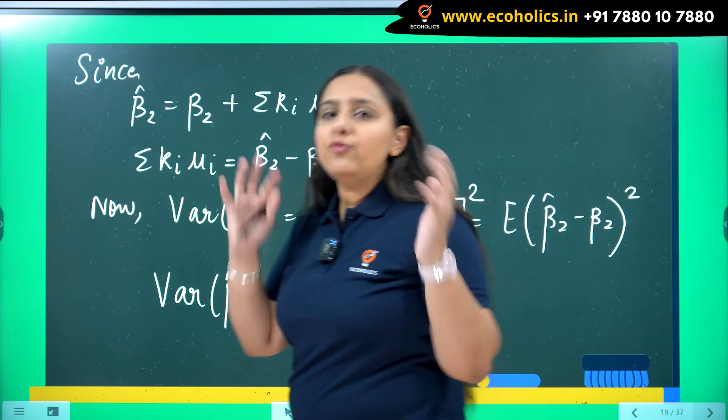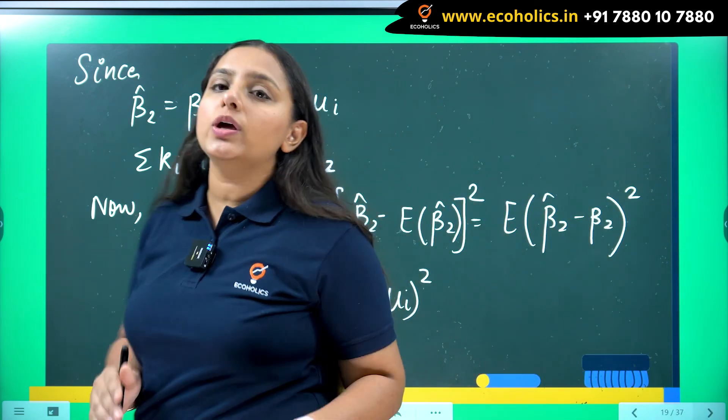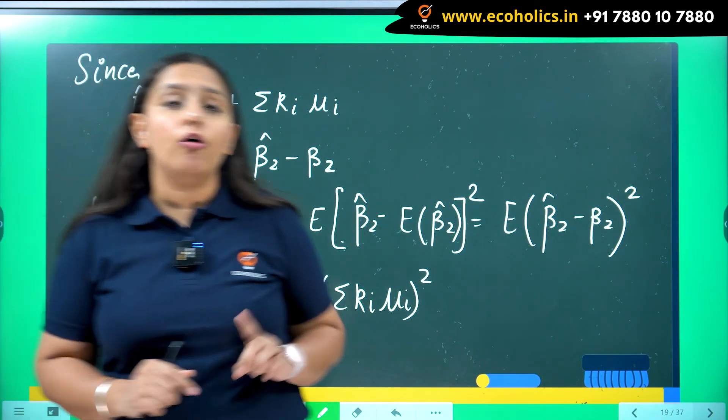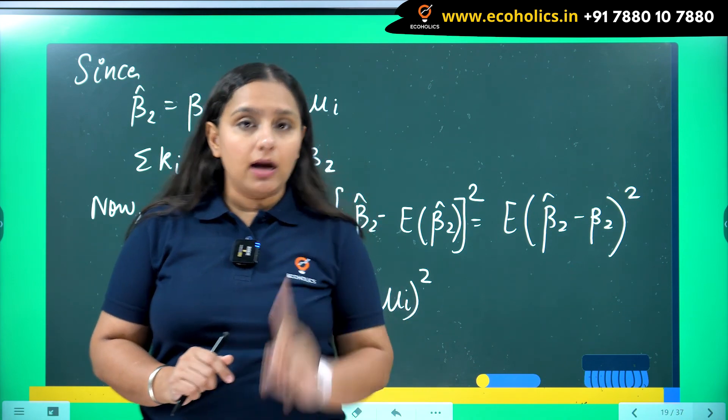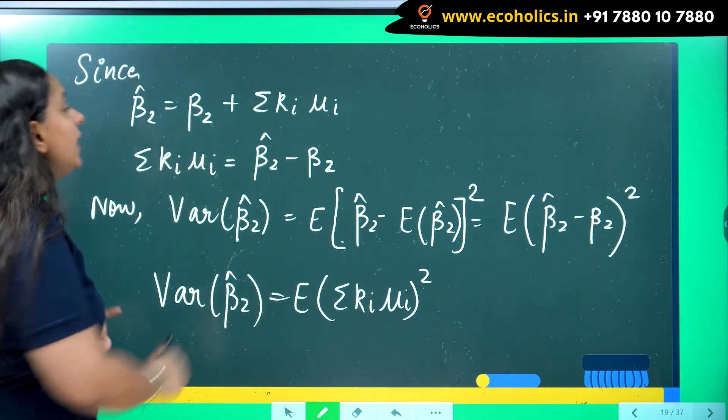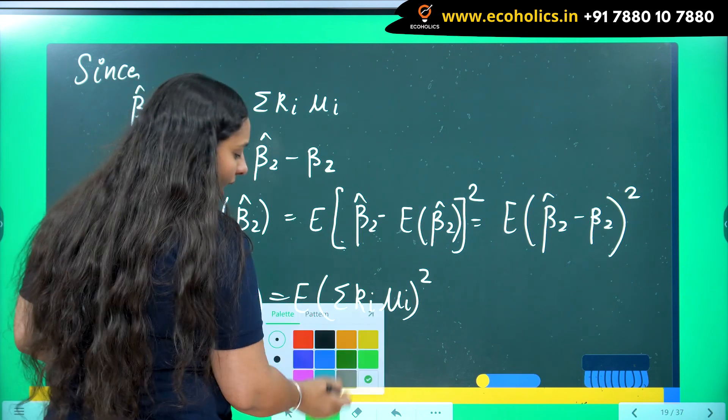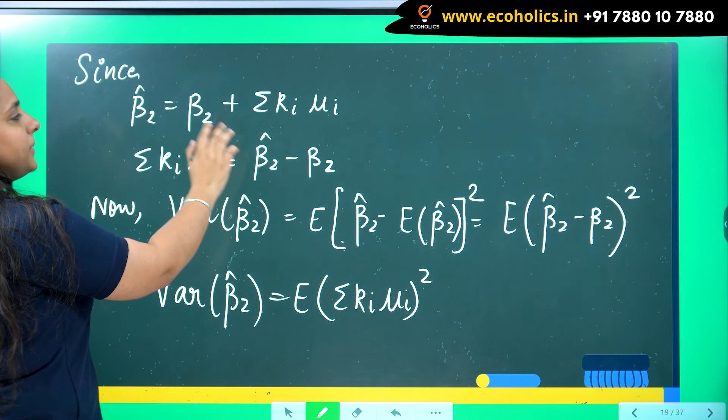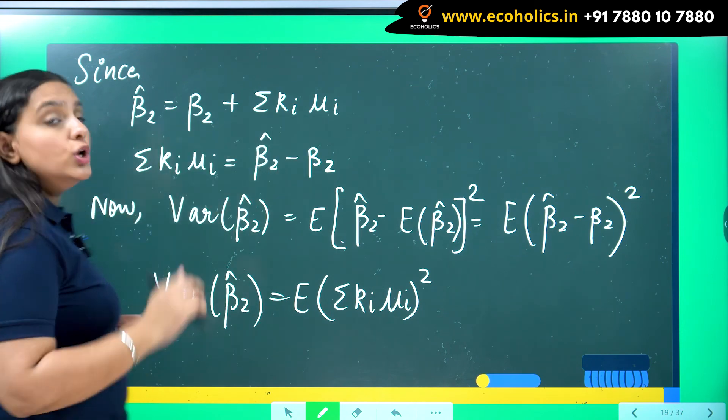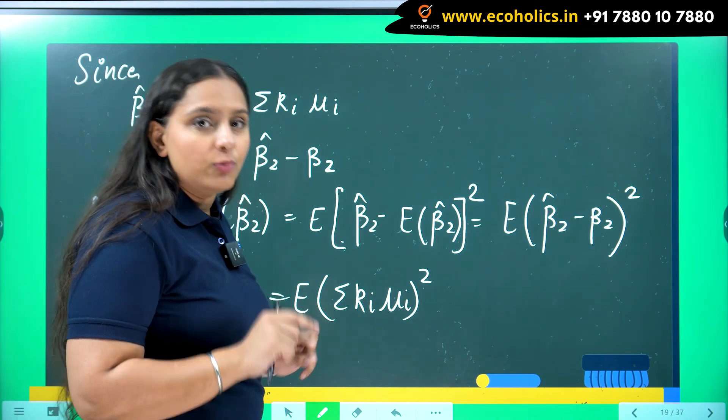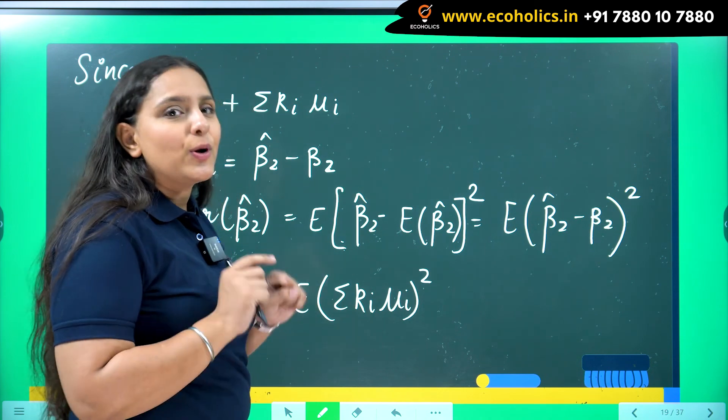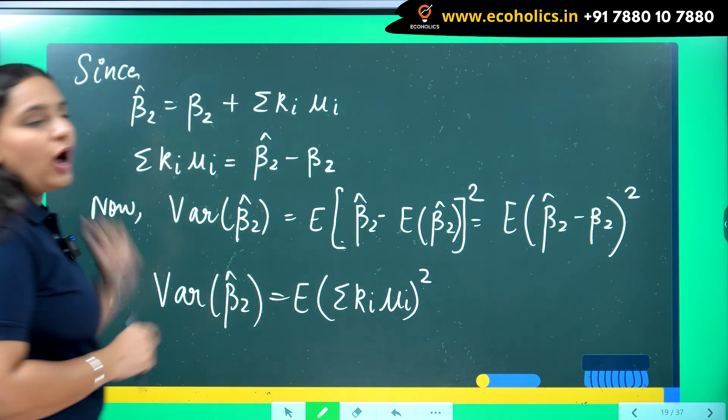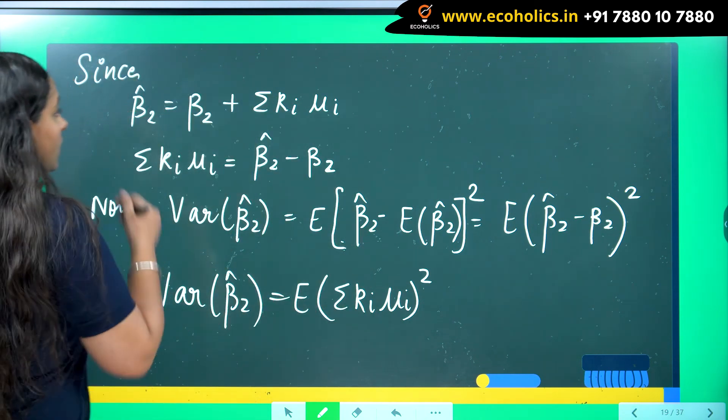Now in the video where I was talking about linearity of beta 2 hat and unbiasedness of beta 2 hat, I wrote my beta 2 hat in this format over here. Beta 2 hat is equal to beta 2 plus summation k i mu i. So if you haven't watched that video, first go and watch it because only then you will understand how we have got this equation.